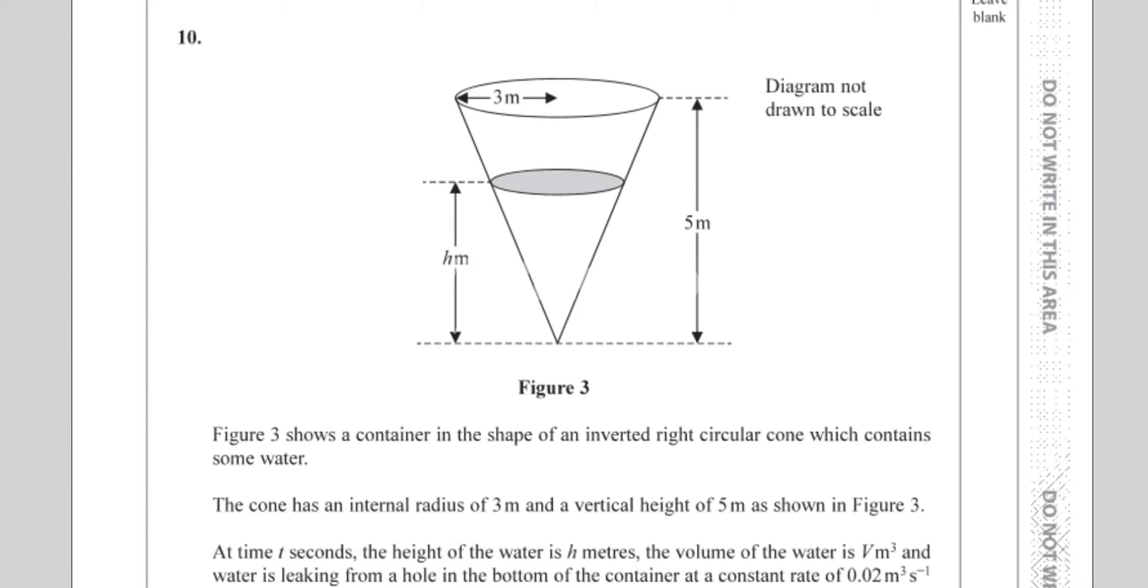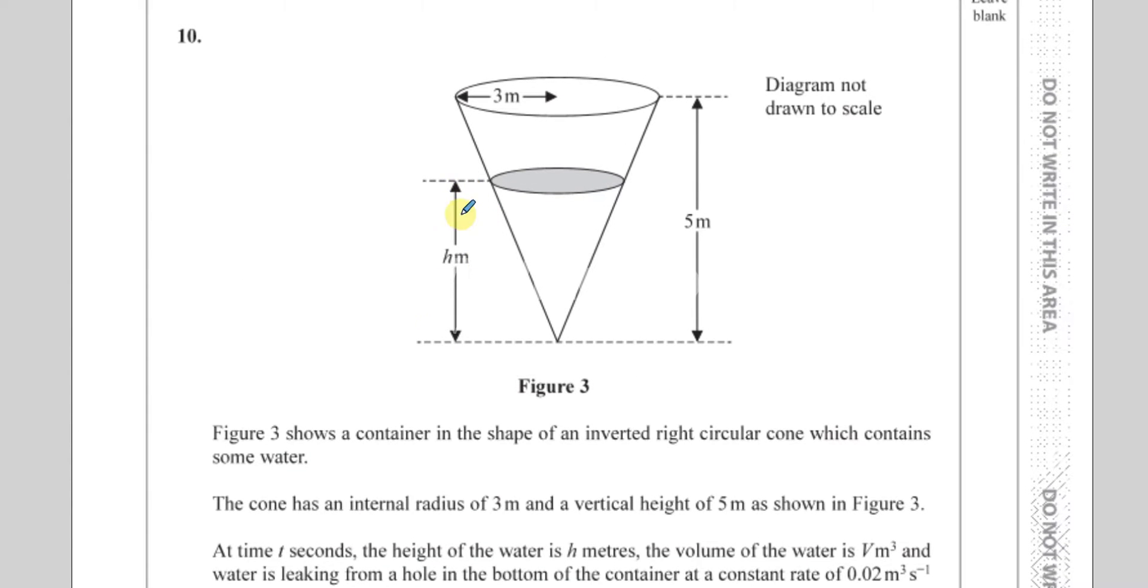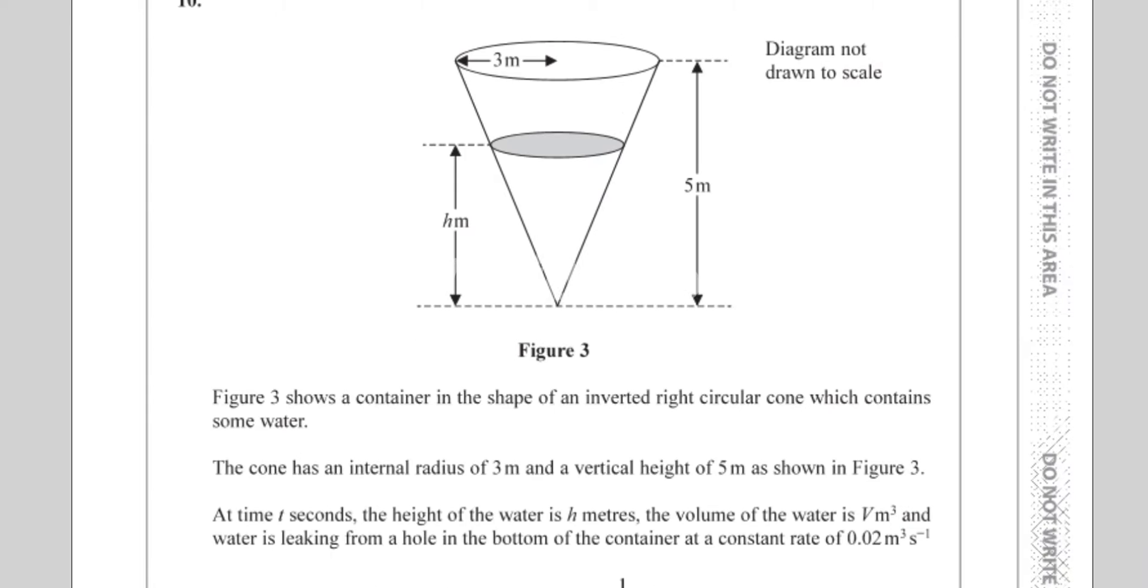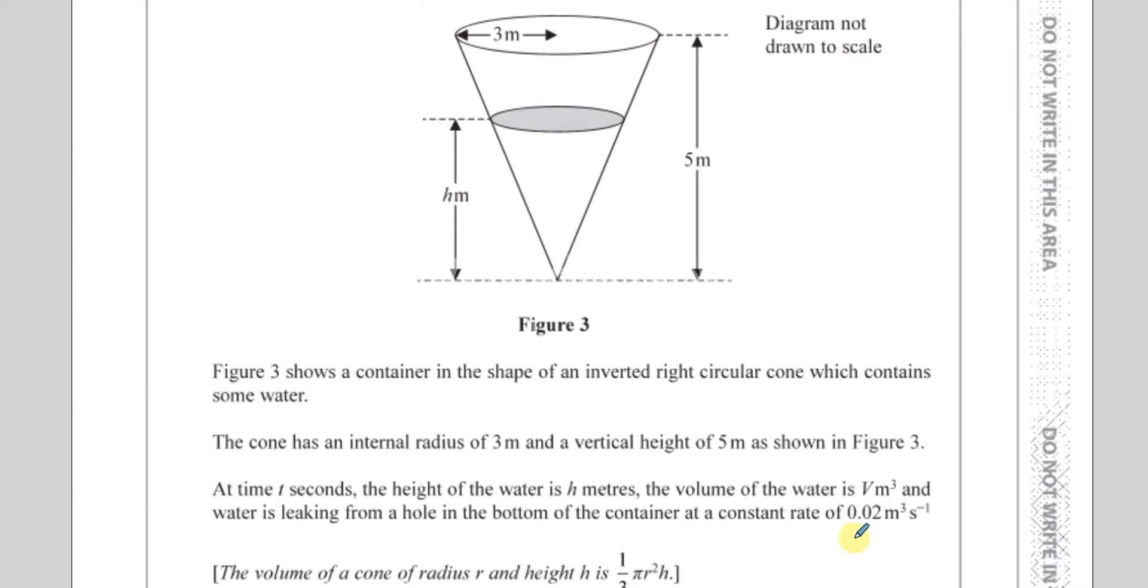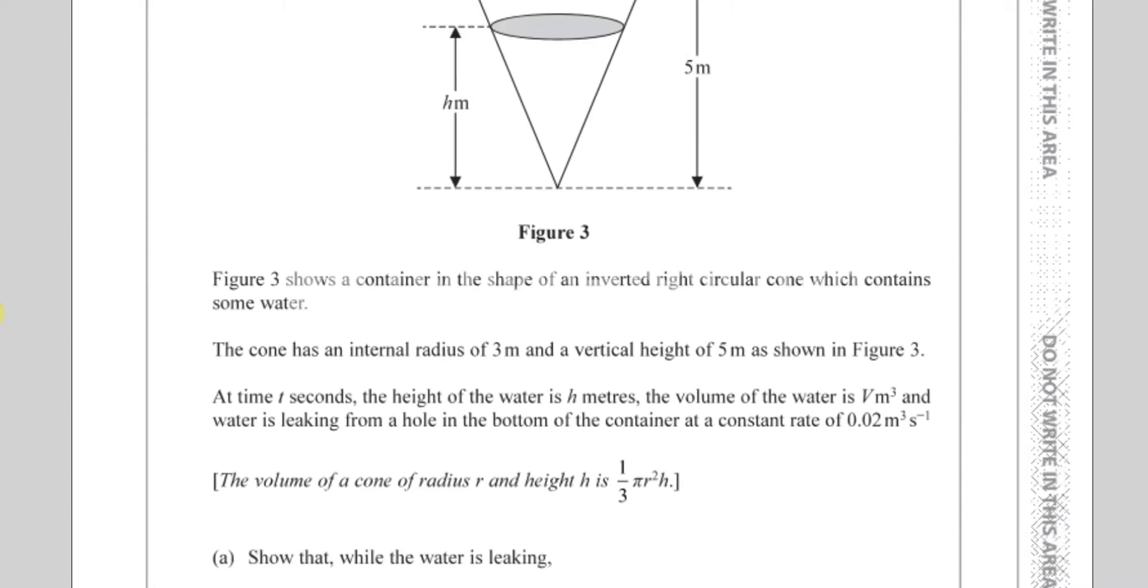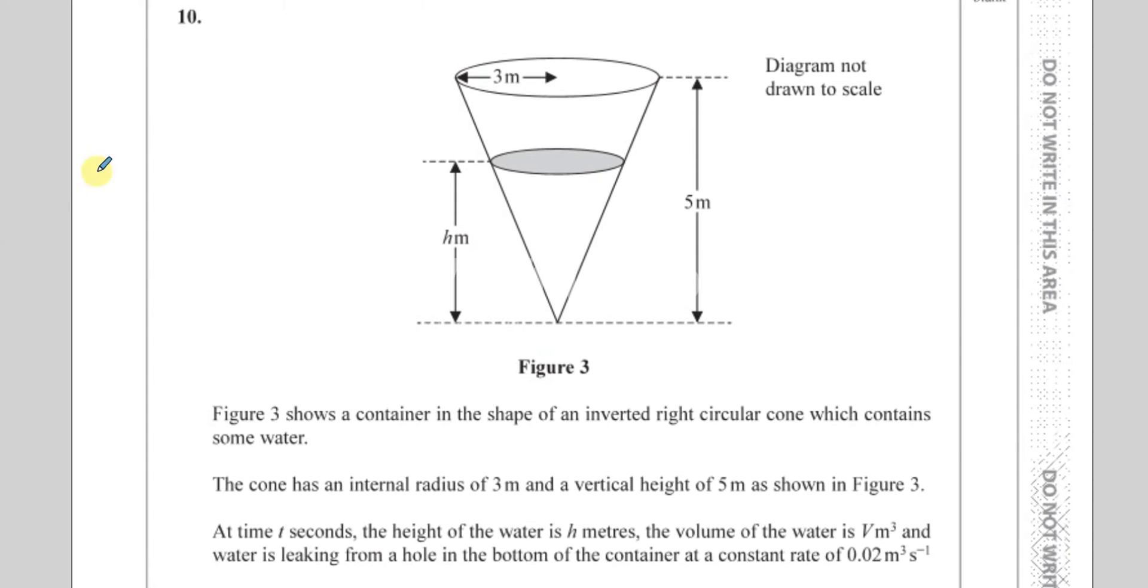At time t seconds, the height of the water is h meters, and the volume of the water is v meters cubed, and the water is leaking from a hole in the bottom of the container at a constant rate of 0.02 meters cubed per second.